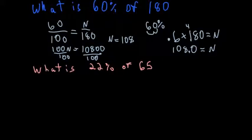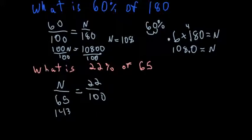All right, so the next example: what is 22% of 65? So again, I can set up that proportion. Is over of—is I don't know, of is 65—equals my percent, which is 22 over 100. So now I need to cross multiply. 22 times 65 is 1430 equals 100N. Cross multiply and then divide.